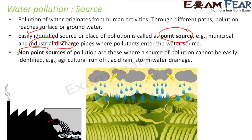There is also something called non-point source, where the source cannot be identified. For example, in agriculture, during heavy rain a lot of water pollution will happen because pesticides, insecticides, and herbicides used on agricultural land will wash off and cause pollution. Sometimes acid rain will cause water pollution, and storm water due to heavy rainfall will also cause water pollution. These are non-point sources — you can't identify the source of this kind of pollution. So there are two kinds of sources: point source and non-point source.